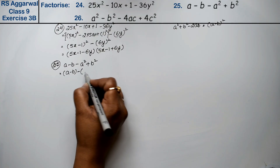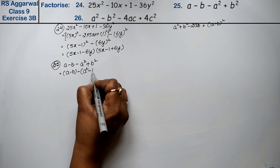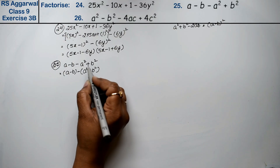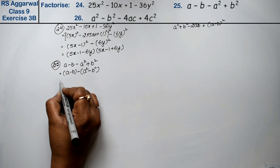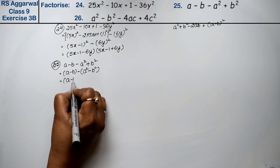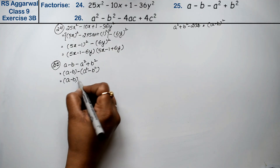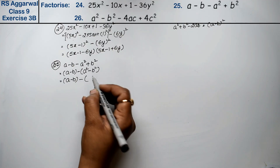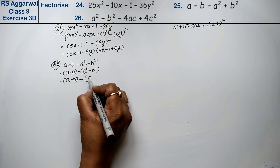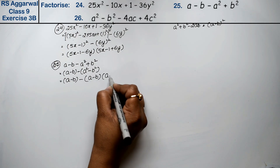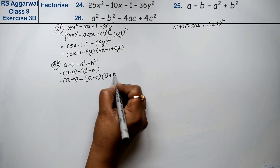The second part, a² minus b², follows the formula a² - b² = (a - b)(a + b). So we write: (a - b) minus (a - b)(a + b). Note that the signs inside changed — it was plus and minus, and now we have (a - b)(a + b).